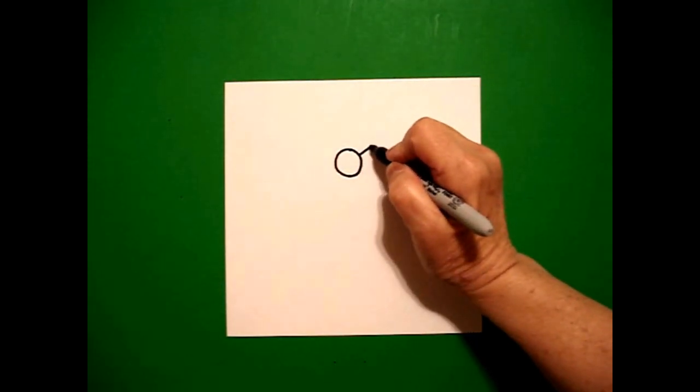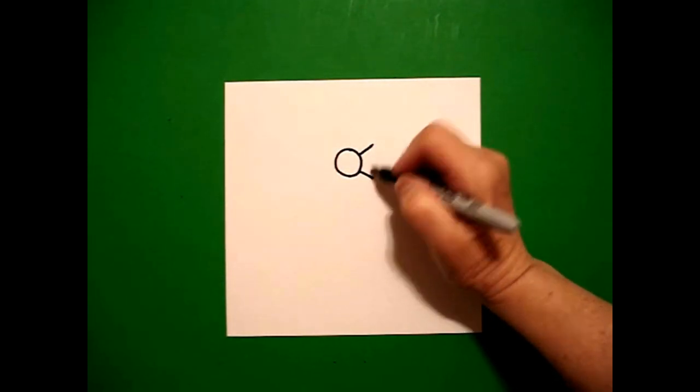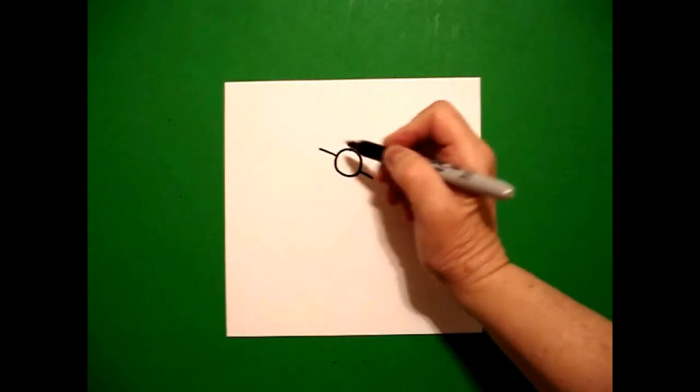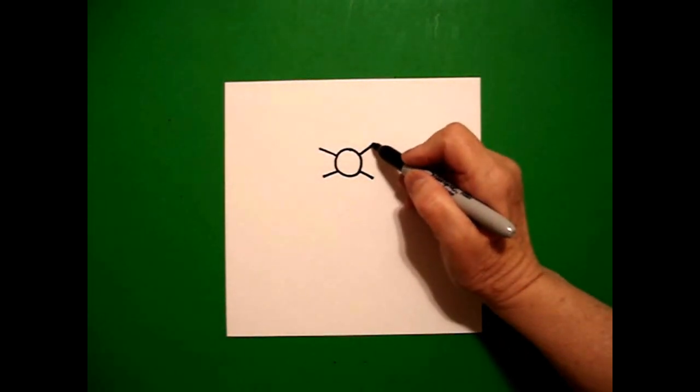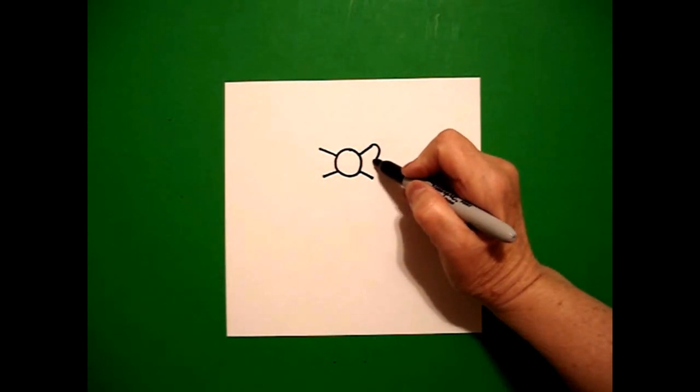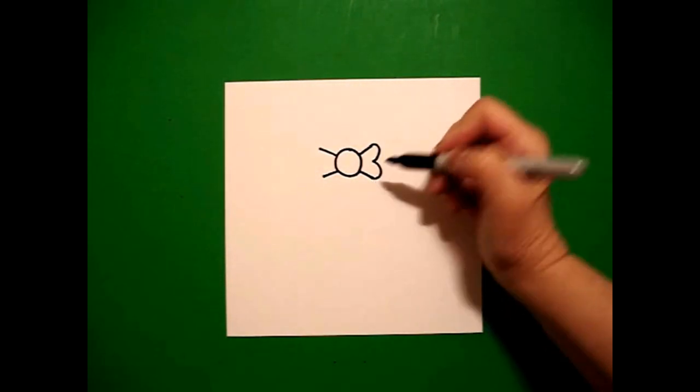Starting on the right, I put straight line out. On the left, straight line out. Come back to the right and we're going to draw curve line in, curve line out, connect.